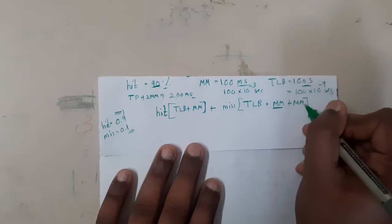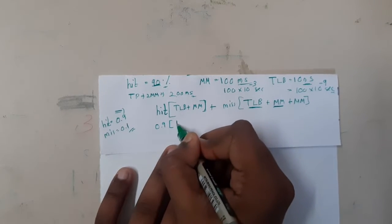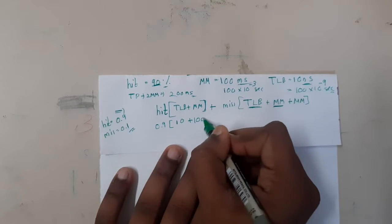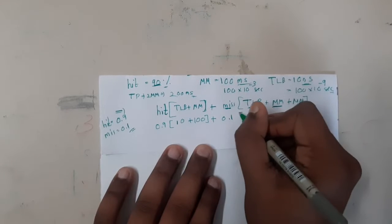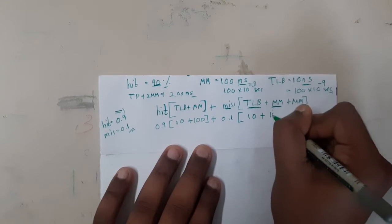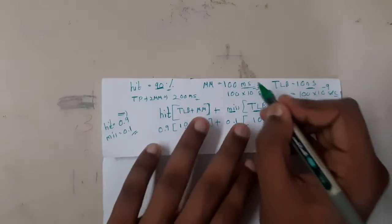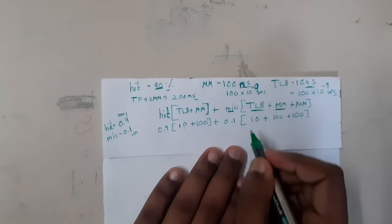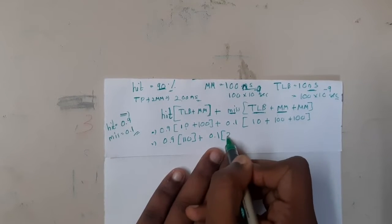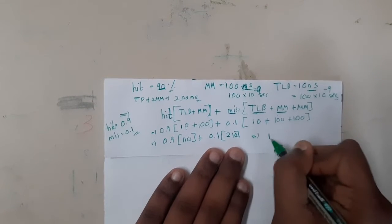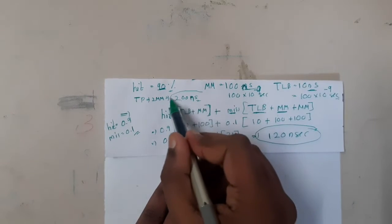The formula becomes: 0.9 × (10 + 100) + 0.1 × (10 + 100 + 100), treating all values as nanoseconds for simplicity. That is 0.9 × 110 + 0.1 × 210 = 99 + 21 = 120 nanoseconds. Even with nanosecond units, you can clearly see this is much faster than 200 milliseconds with traditional paging. In reality, since MM is in milliseconds, the speedup is even more dramatic.